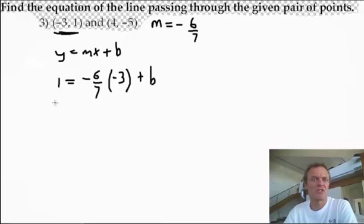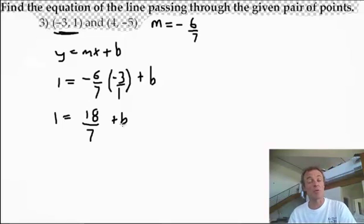So, bit of fraction stuff here. Now, I've still got 1, but what's negative 6 7ths times negative 3? Well, for a start, two negatives make a positive. If you want to try this, 3 is 3 over 1. The numerator is 6 times 3 is 18. Denominator is 7 times 1 is 7, and I've still got plus b. So, remember, 2 negatives, that's positive 18 7ths.